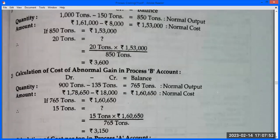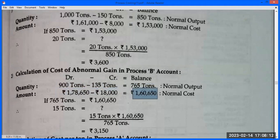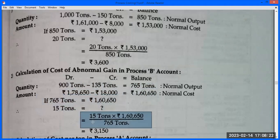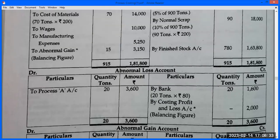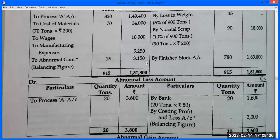Working note for Process B: calculate the rate. Debit side total amount = ₹1,49,250. Subtract scrap credit ₹18,000. Balance amount = ₹1,31,250 — wait, recalculate: balance quantity = 900 − 135 = 765 tons. Abnormal gain amount = 15 × rate. Rate calculation gives abnormal gain = ₹3,150. Debit total quantity = 900 + 15 = 915.